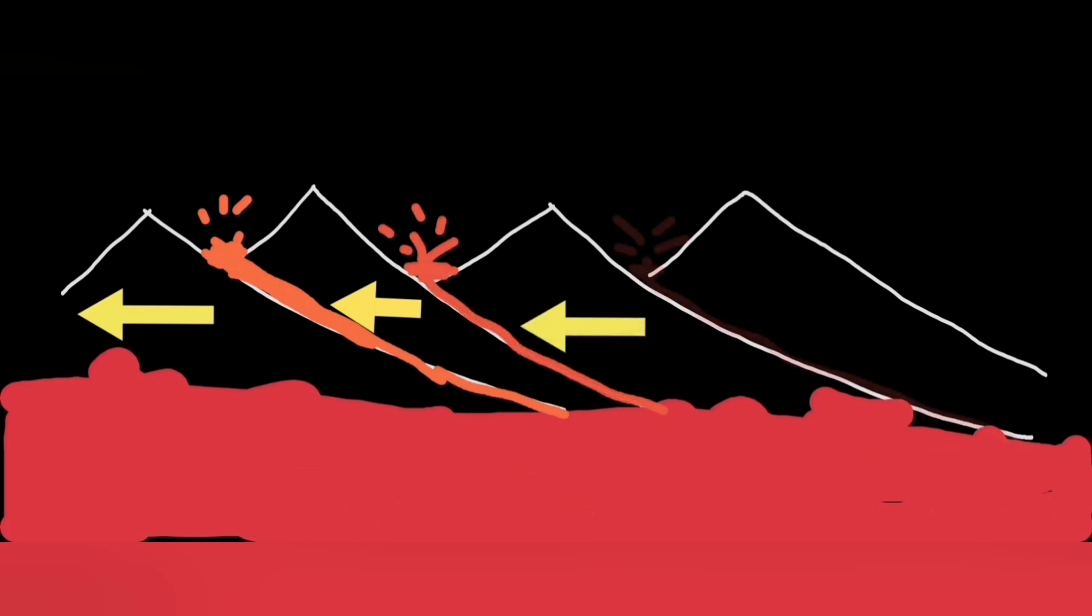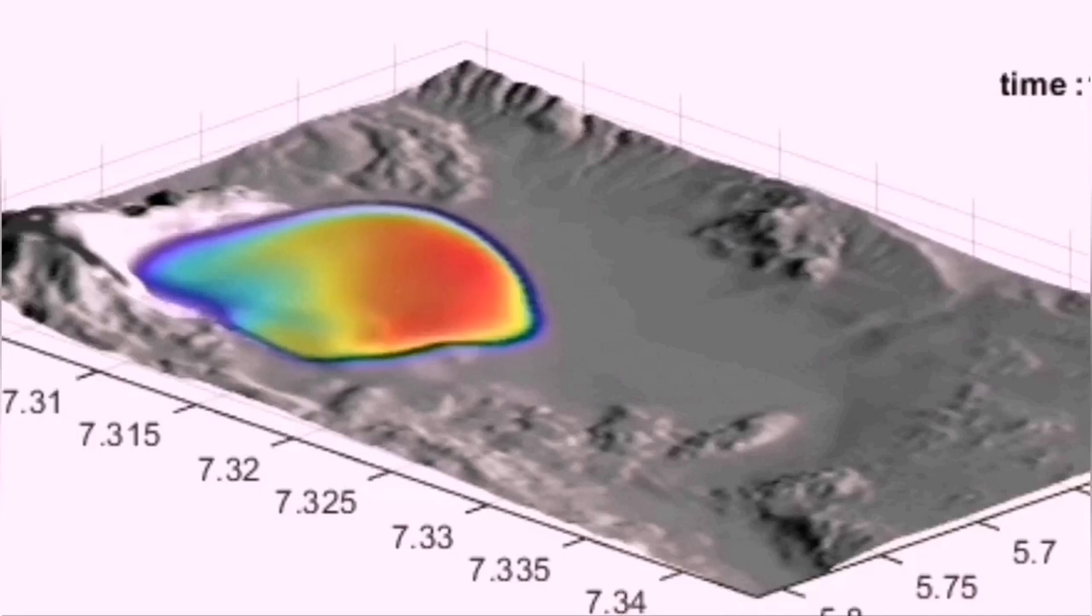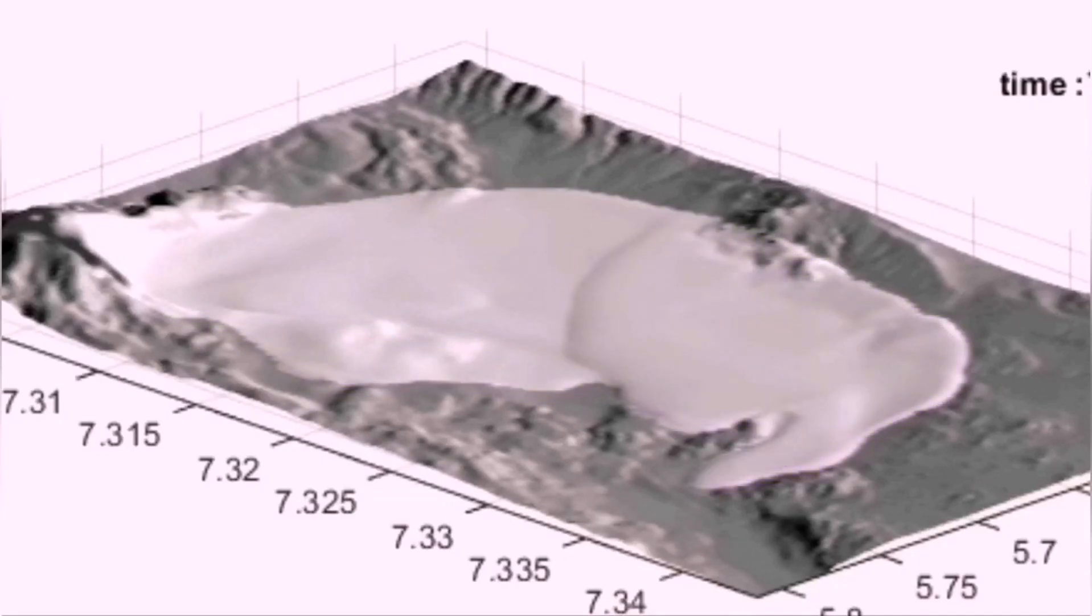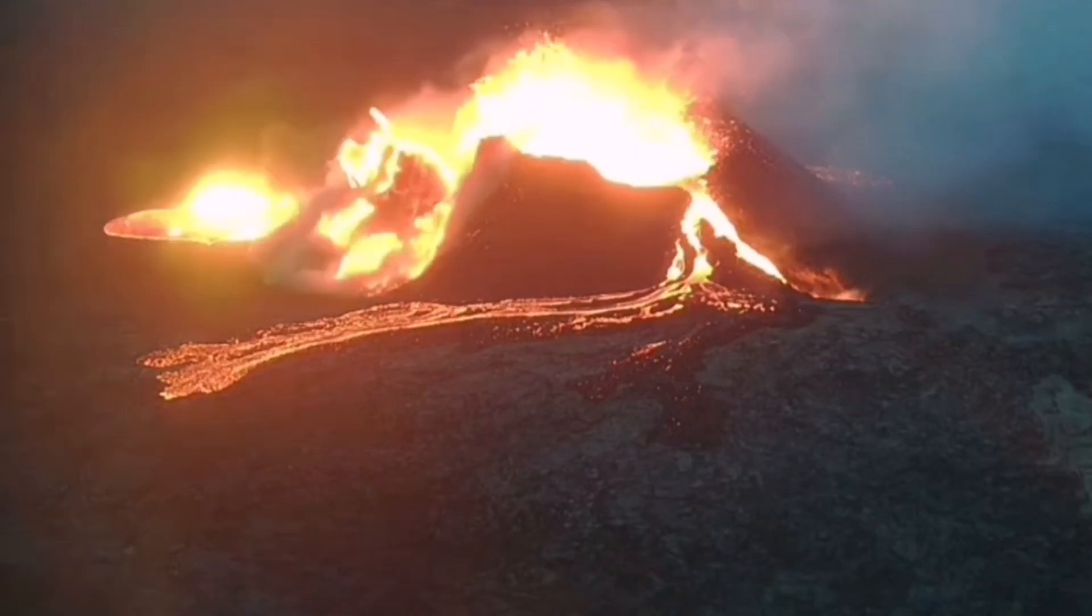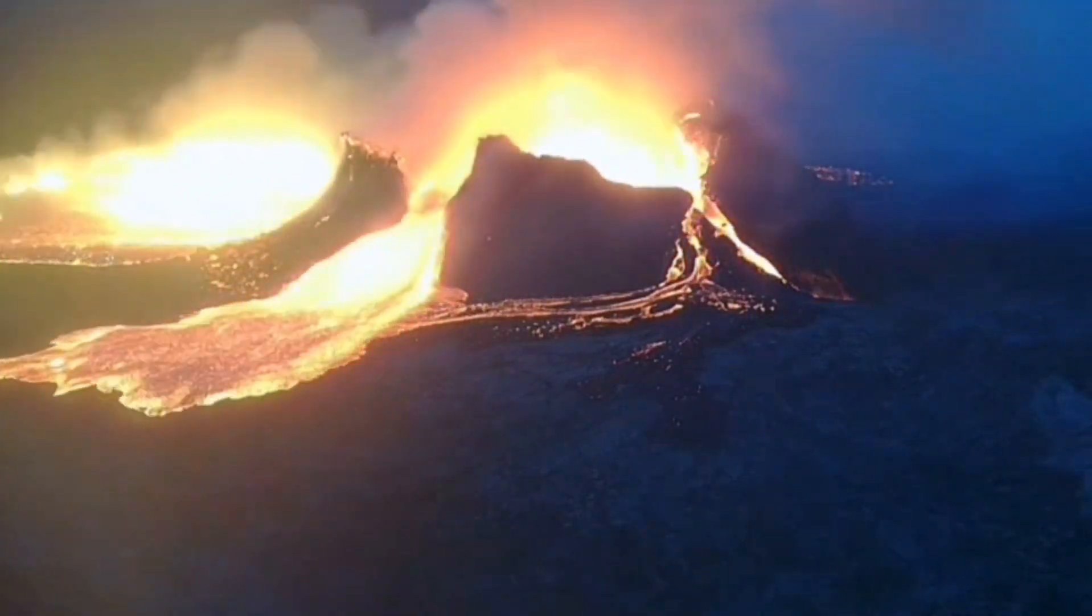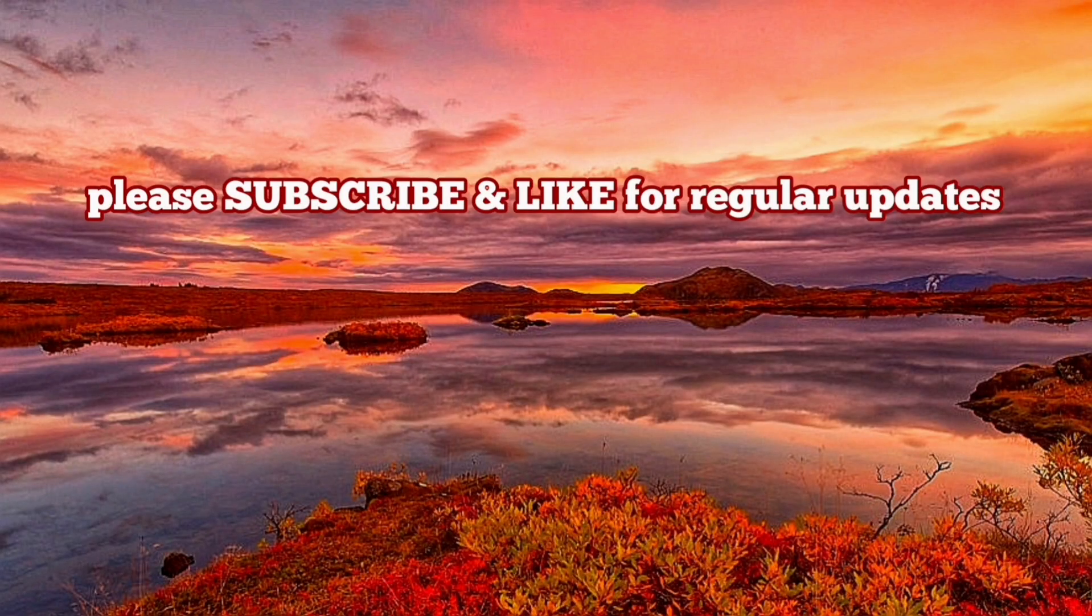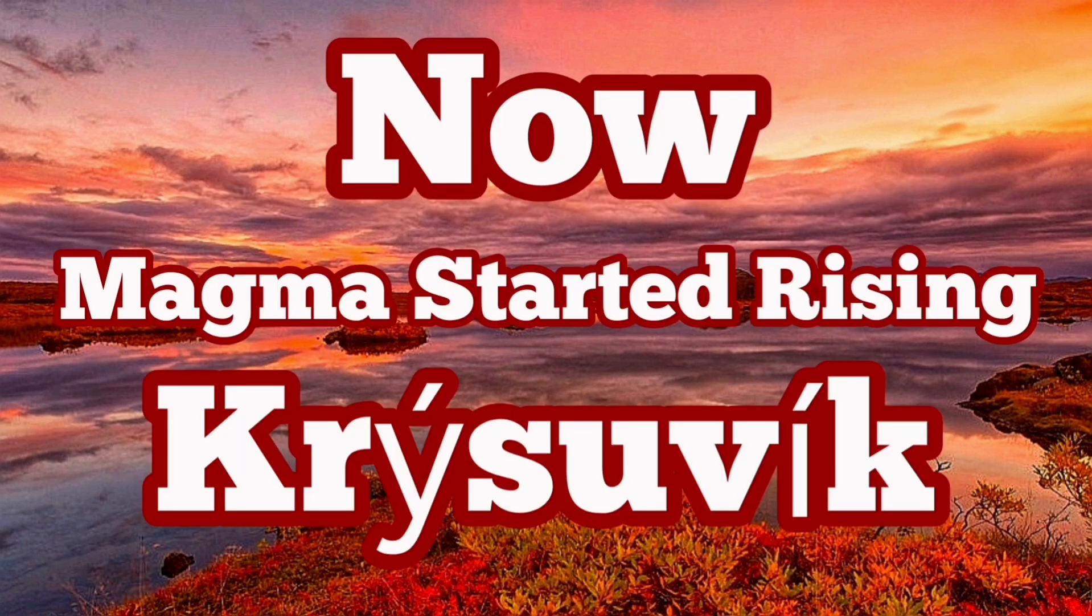This is a scary situation because the Swartzengi Blue Lagoon Grindavik volcanic system is now active. And the magma movement in that direction can actually increase the chances of the risk to the buildings and the structures in the vicinity of those areas, including Reykjavik, the capital of Iceland.